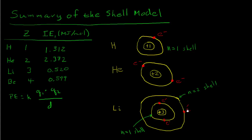This outer electron is in what we call the valence shell — every atom has an outer shell, so every atom has a valence shell. Any electrons in the valence shell are called valence electrons. Lithium has only one valence electron. The n = 1 shell down here is not the valence shell, so we call it an inner shell. Hydrogen and helium have no inner shells, while many atoms will have multiple inner shells.